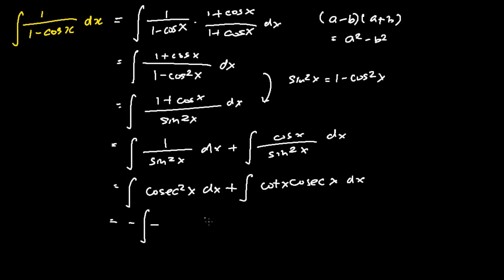As for the first integral, we will multiply negative 1 outside of the integral, and then within the integral, multiply by negative 1. So that will be negative the integral of negative cosecant square x dx.